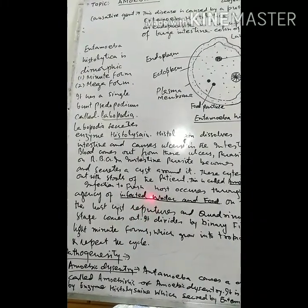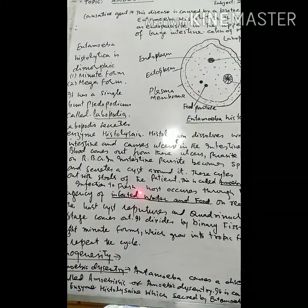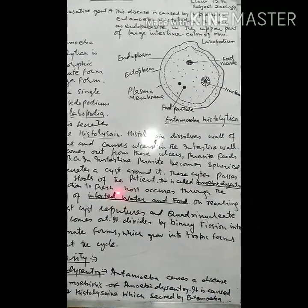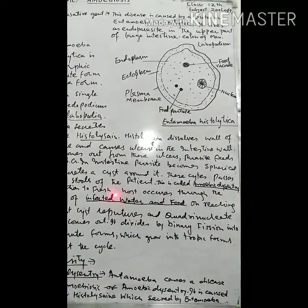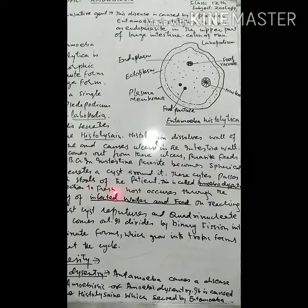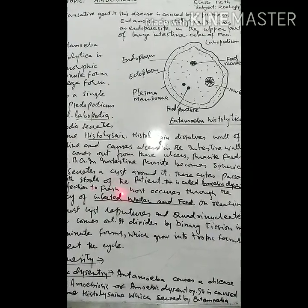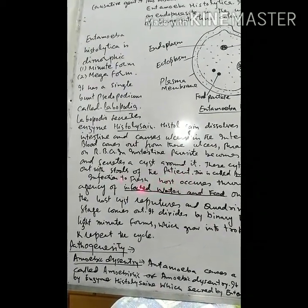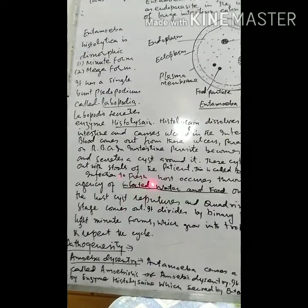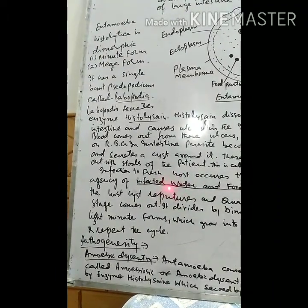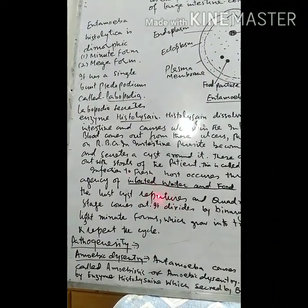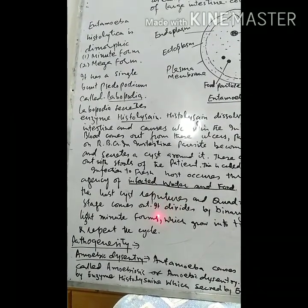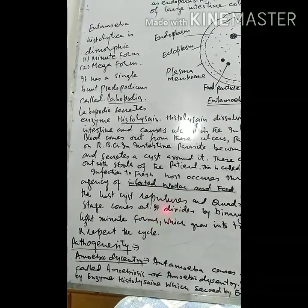Entamoeba histolytica forms a cyst in the intestine — a wall around itself forming a ball with four nuclei inside. When the cysts pass out with the stools, and another host ingests them through contaminated food and water, the cycle continues.